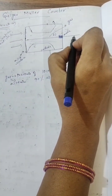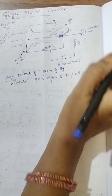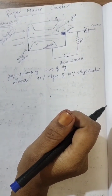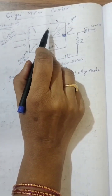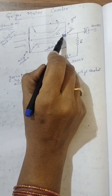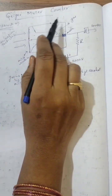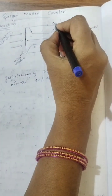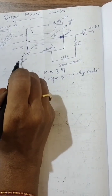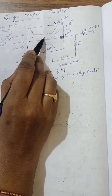This tungsten wire is further connected to an amplifier and then to the counter. This is all about the construction. The construction consists of a cylindrical copper tube. A tungsten wire is connected across this copper tube and this arrangement is placed in a glass tube. One end of the glass tube is provided with a mica window through which charged particles enter.